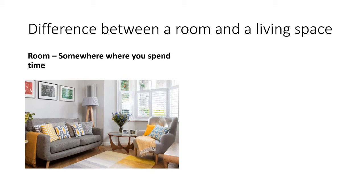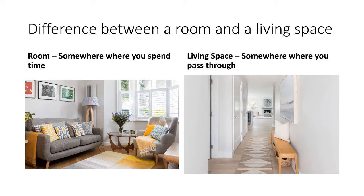A room is somewhere where you spend time — a living room, a kitchen, something like that. A living space is somewhere that you pass through, like a hallway or a utility room. If you put a fire in either of those two places, they have different ventilation requirements from each other, as shown on the chart.